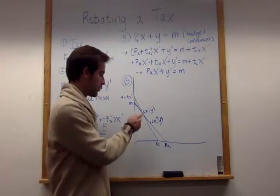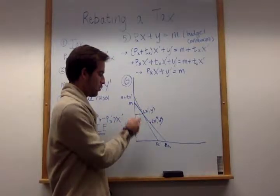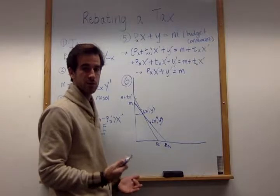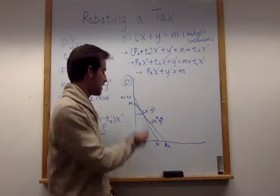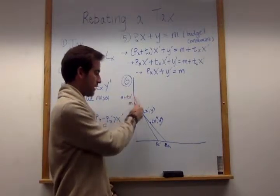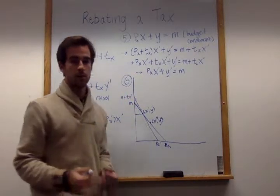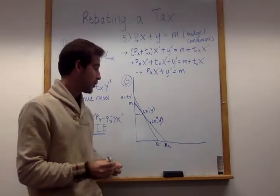So we can automatically eliminate this whole part of the graph as possible to the consumer, because we know they wouldn't choose it. They didn't choose it before, they won't choose it now. Meaning that this new red streaked area is going to be the place where the consumer is going to now consume.